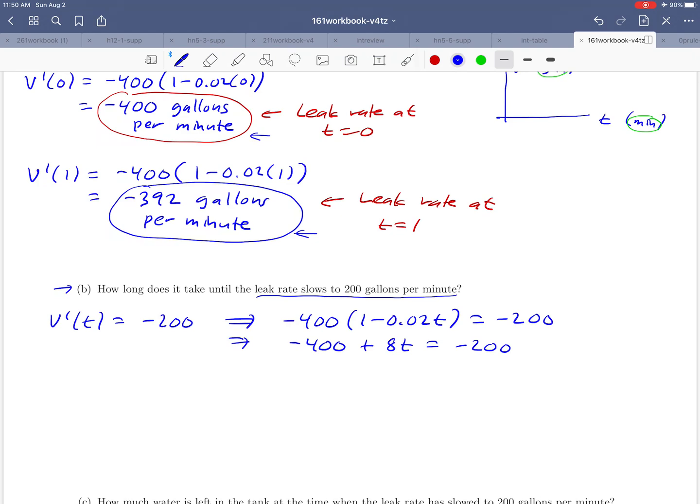So that 8 just comes from taking negative 400 and multiplying by negative 0.02. What could we do next here? So maybe add 400 to both sides. And that's going to give us 8t equals positive 200. Negative 200 plus 400. Divide through by 8, and we should have it. So 200 over 8 is 25. And units of time in our problem are minutes. So 25 minutes, that appears to be our answer to part B.